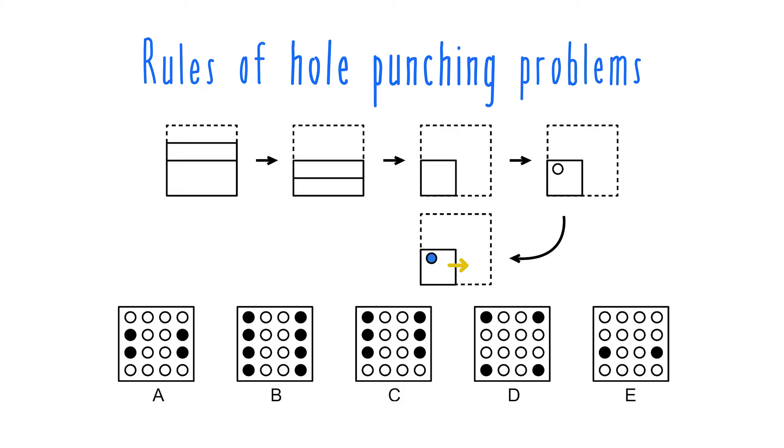So for this one, if you track the hole during the unfolding, you'd see that it reflects here, then here, then here. And you end up with this, and this matches the pattern shown in choice C.